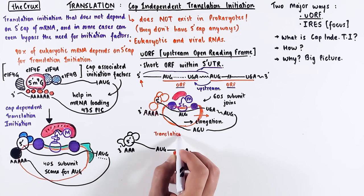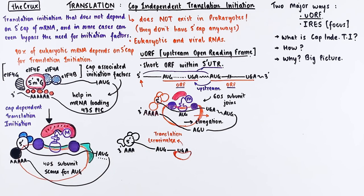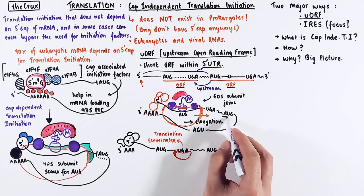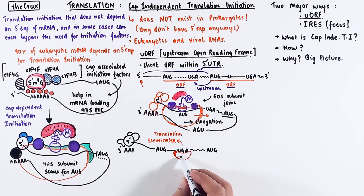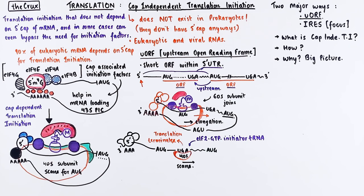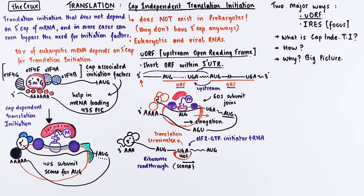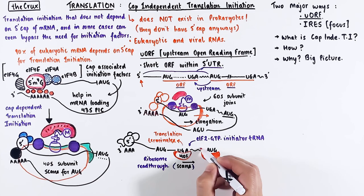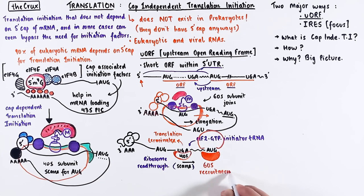But the 40S subunit does not actually dissociate from the mRNA. It keeps scanning for the start codon, which is the AUG. While scanning occurs, the eukaryotic initiation factor 2, which is in complex with the initiator tRNA, gets recruited onto the subunit. This process of ribosome scanning is called ribosome read-through — even after translation has terminated, the 40S subunit continues to scan for a start codon. And when it finds the start codon, the 60S subunit is again recruited, and translation continues into an elongation step.